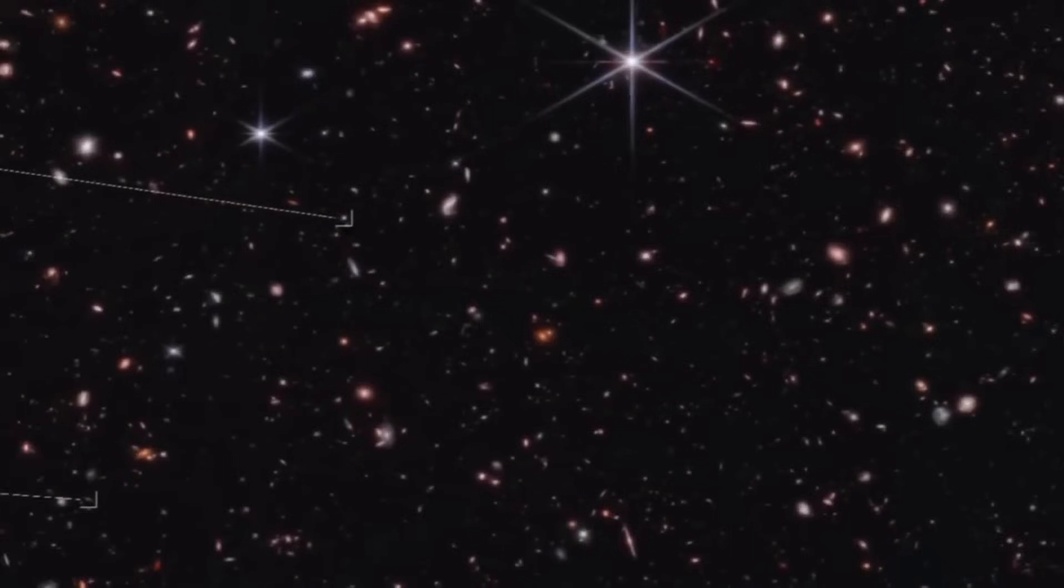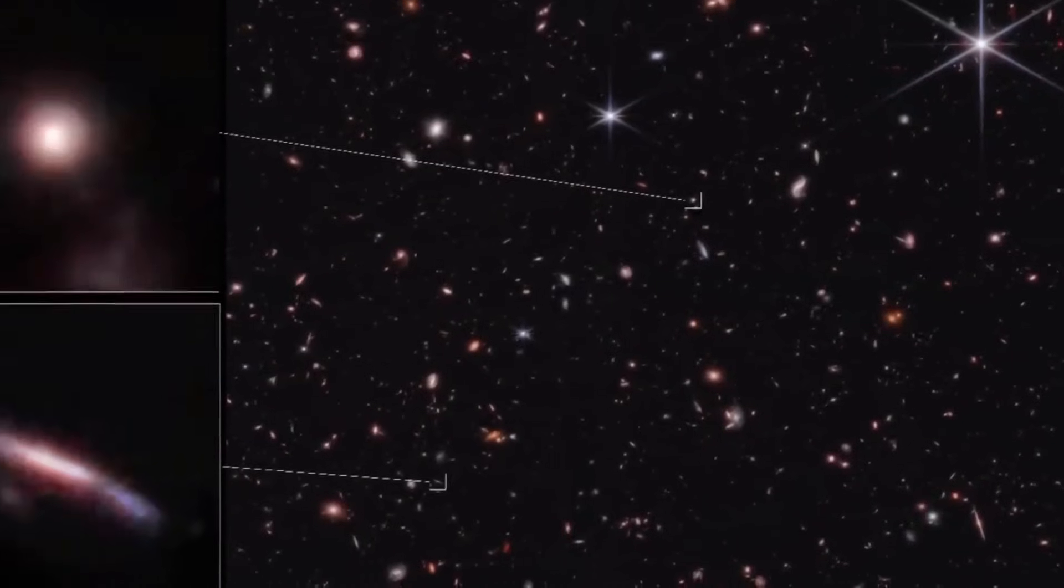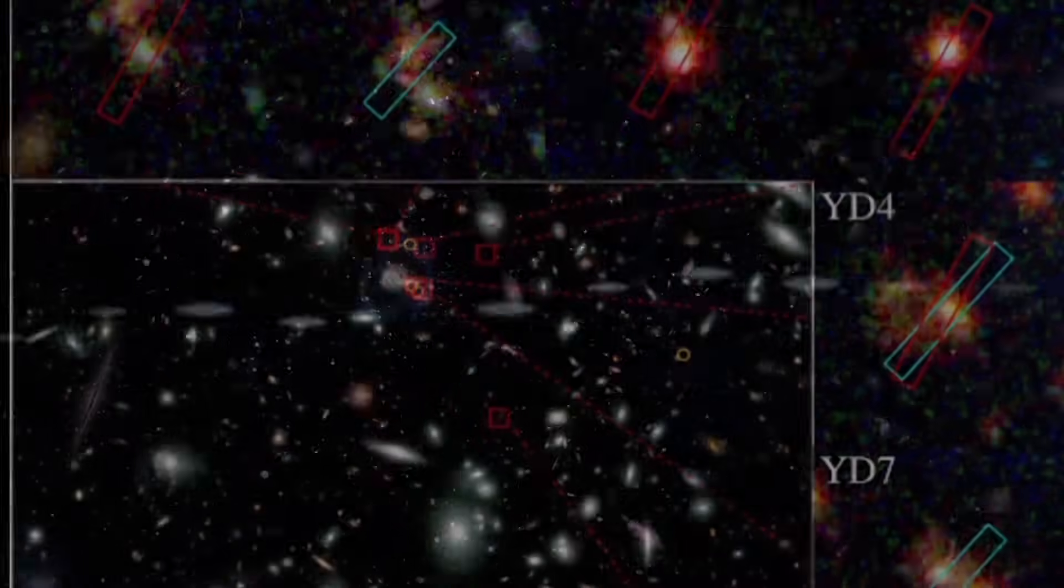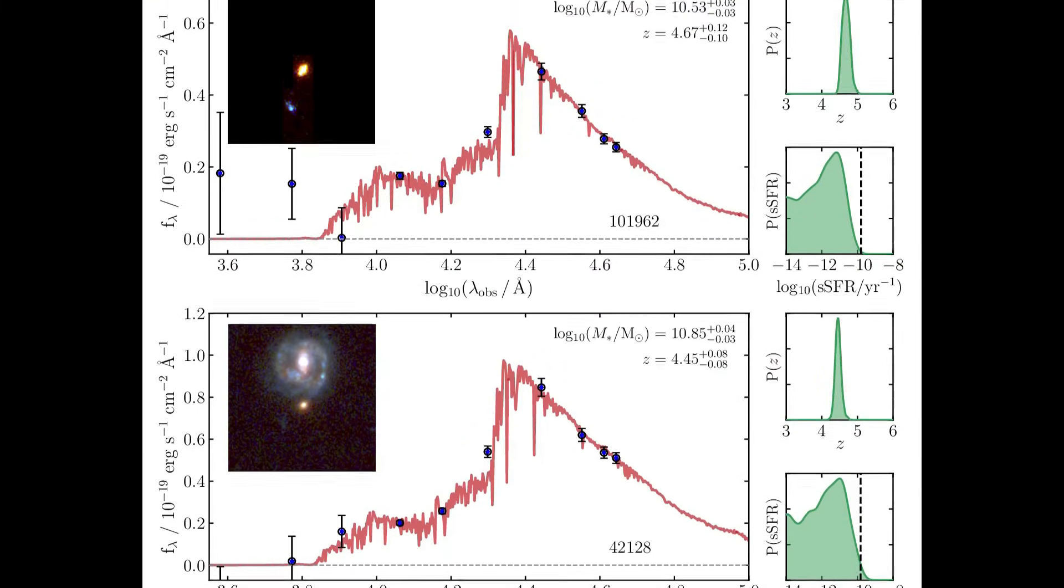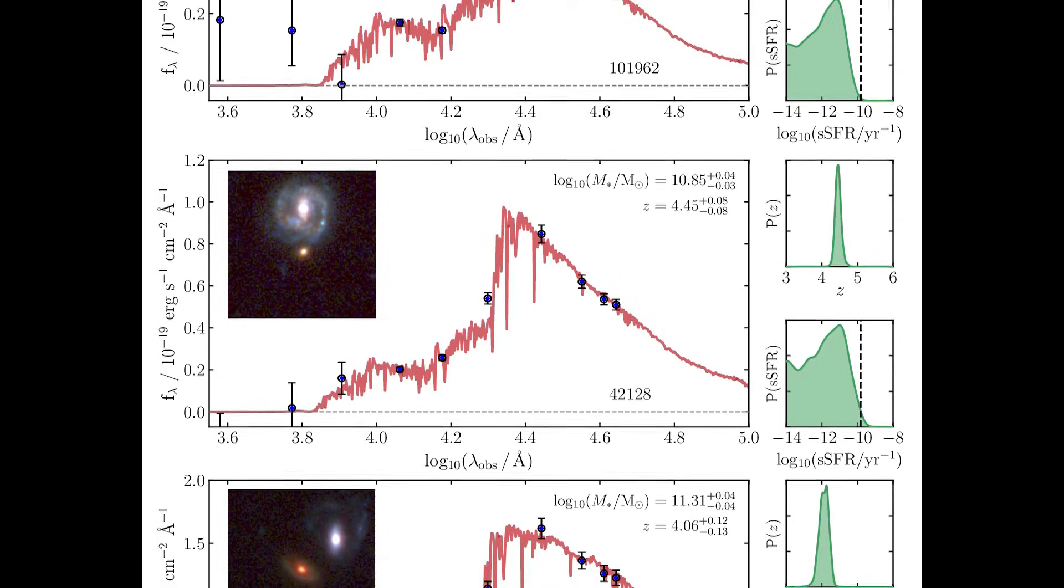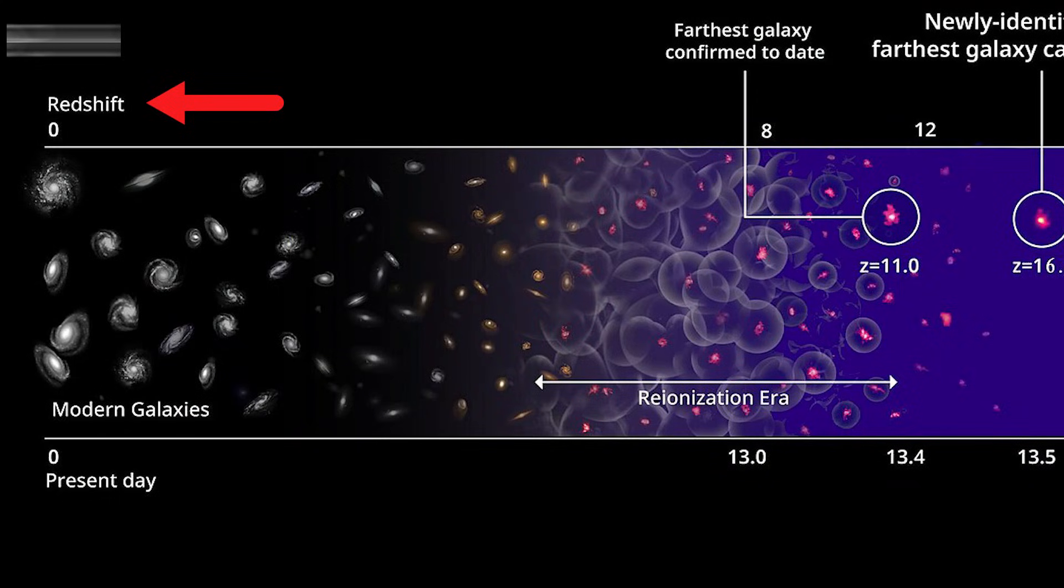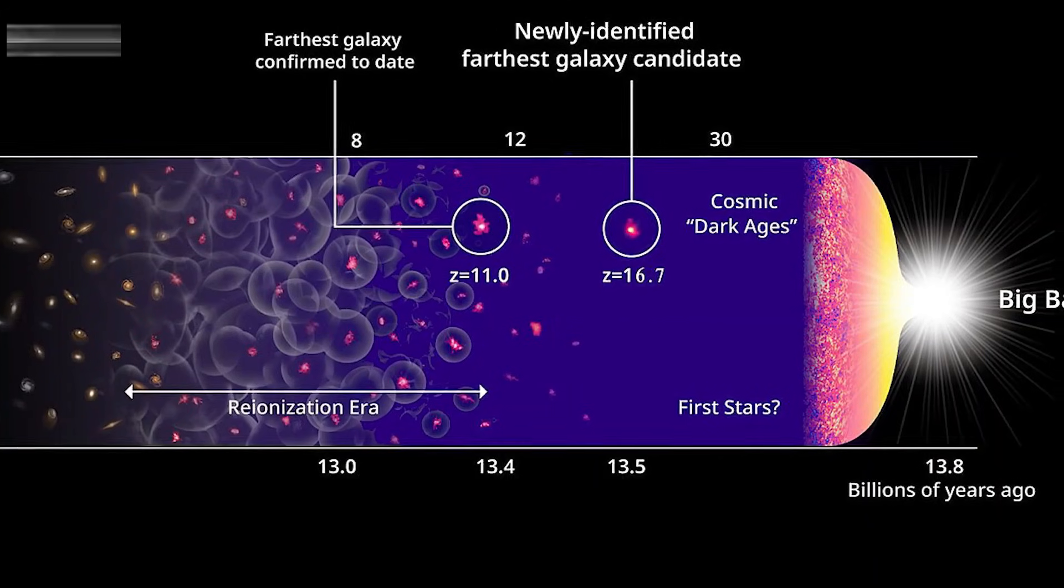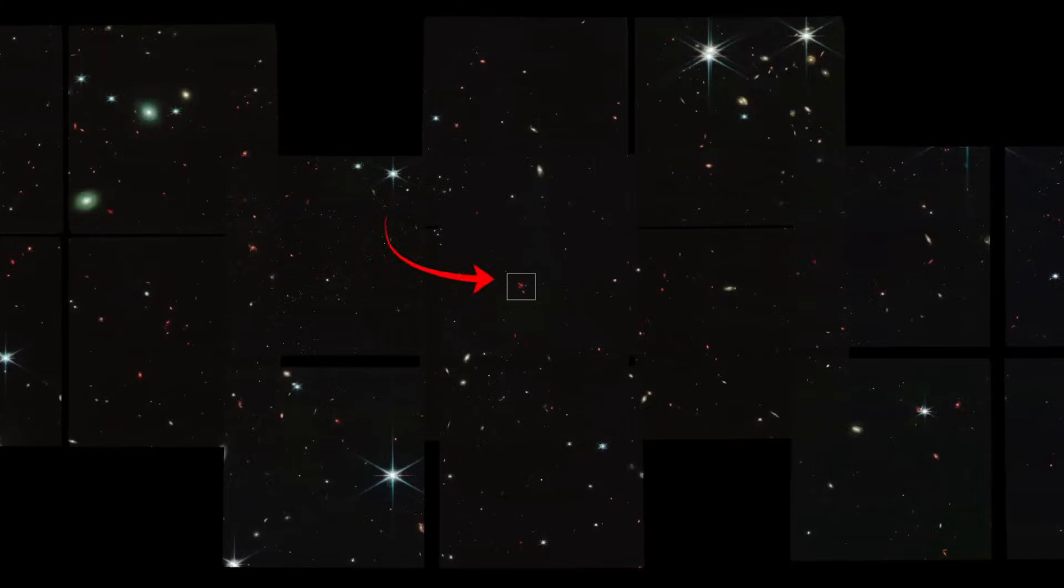By the way, the galaxies of the early universe have not been the only headache for scientists. As we've discussed before, recent findings from the Webb telescope suggest that the universe might be expanding at different rates in different regions. This challenges the long-standing belief that cosmic expansion is the same everywhere in the universe, and that it began after the Big Bang.